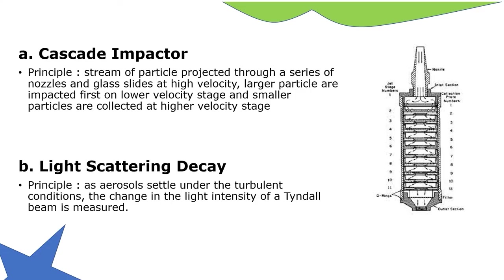Cascade impactor: a stream of particles is projected through a series of nozzles and glass slides at high velocity. Larger particles are impacted first at lower velocity stages and smaller particles are collected at higher velocity stages. In light scattering decay, as the aerosol settles under turbulent conditions, the change in light intensity of a Tyndall beam is measured.